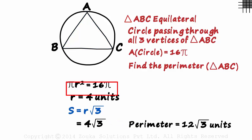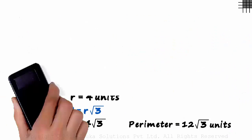Area of the circle to its radius, radius to the side, and side to the perimeter. So with respect to this figure, remember a few simple things.